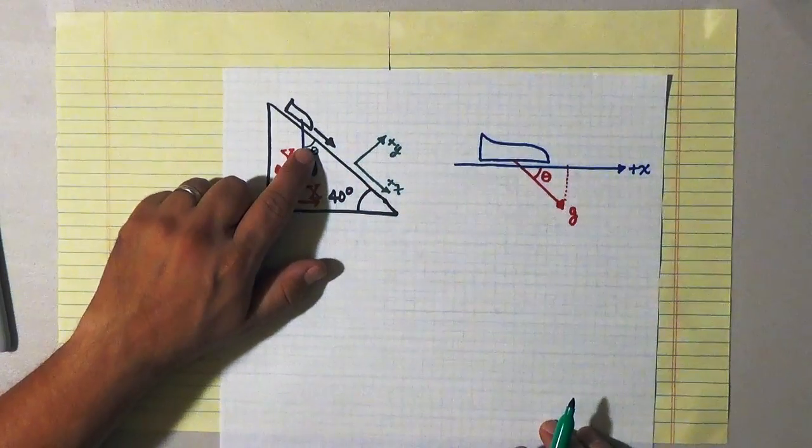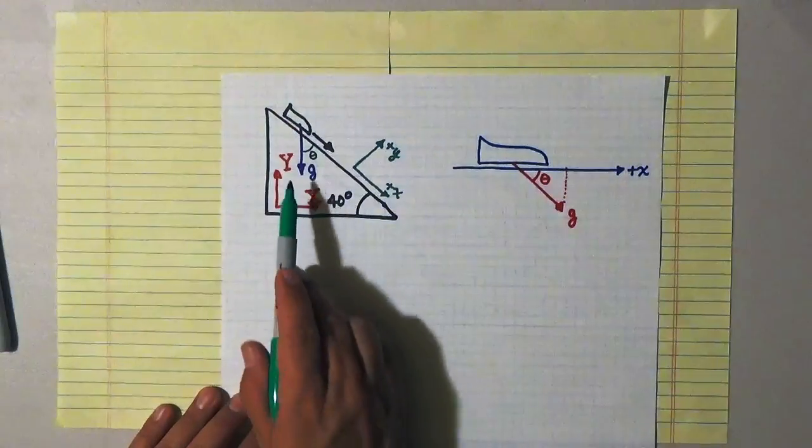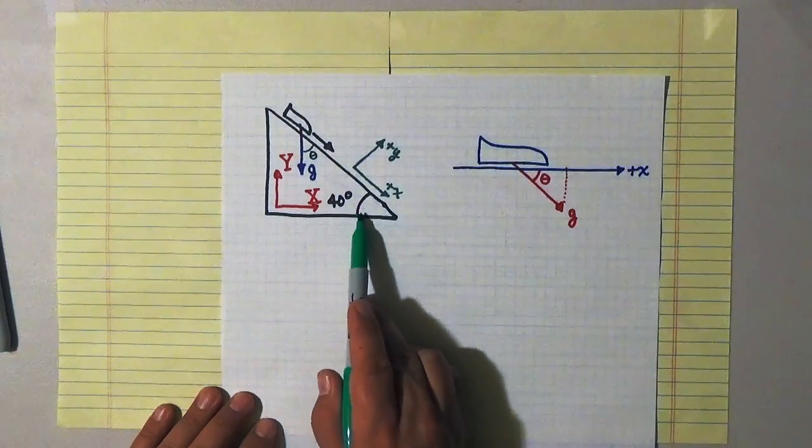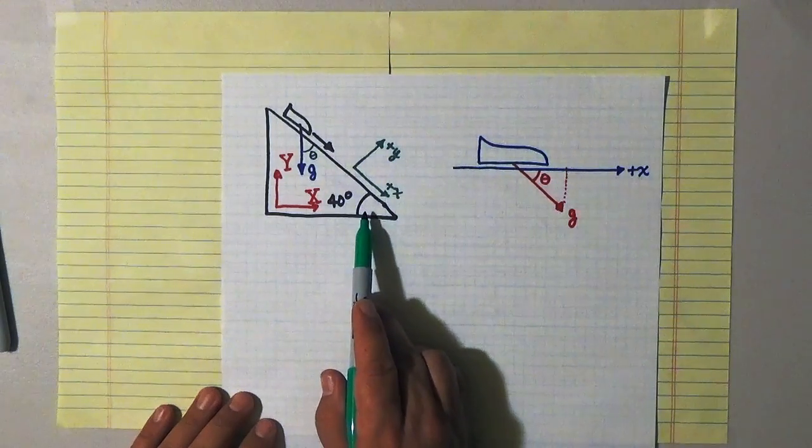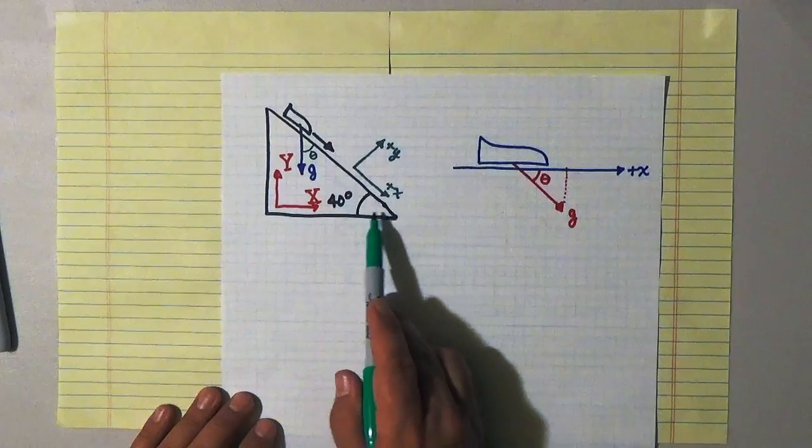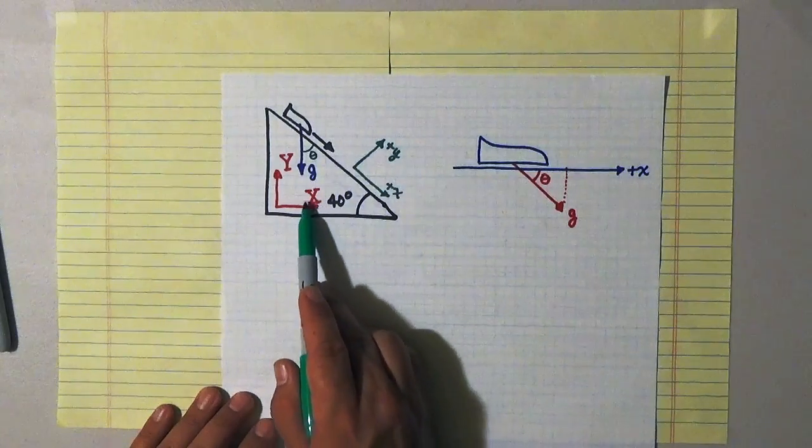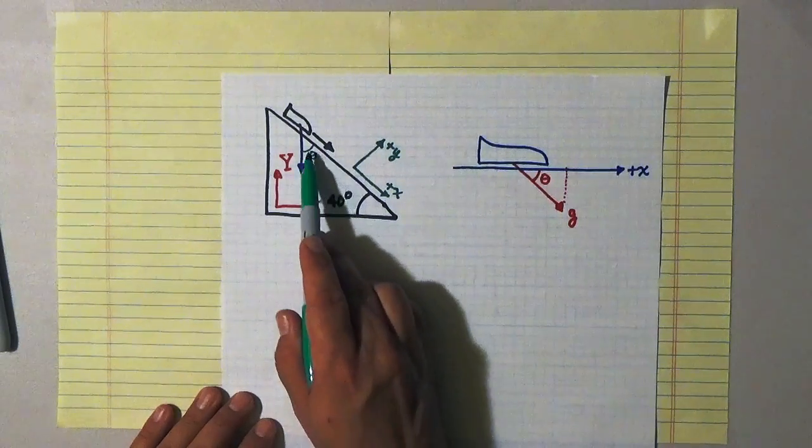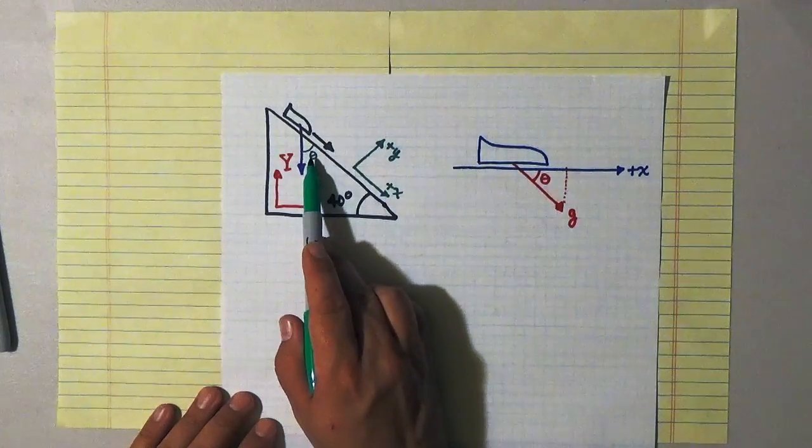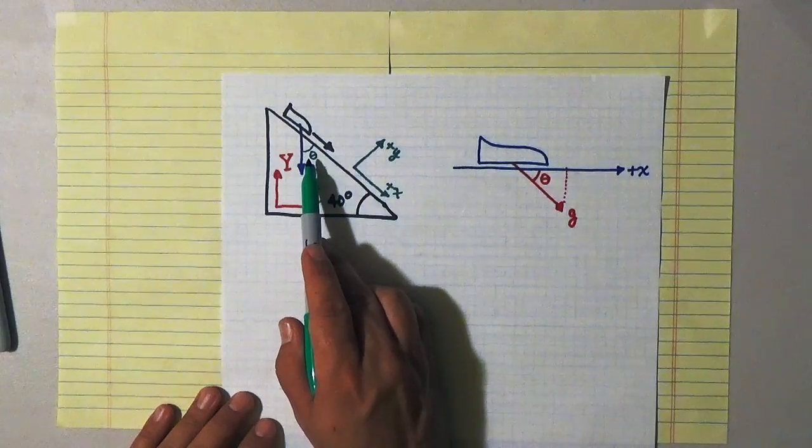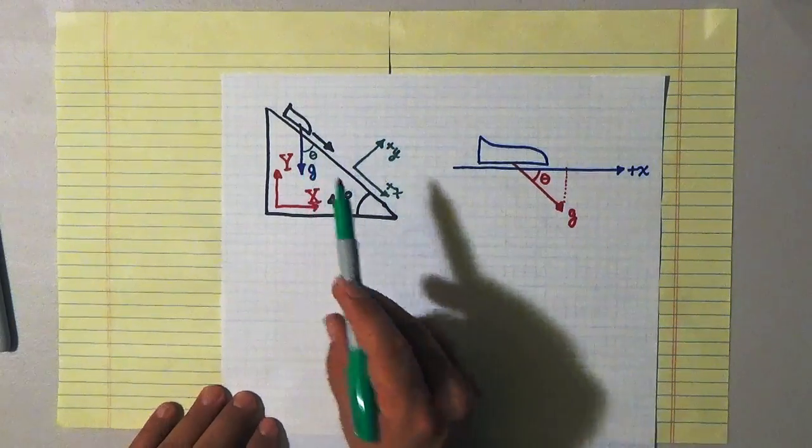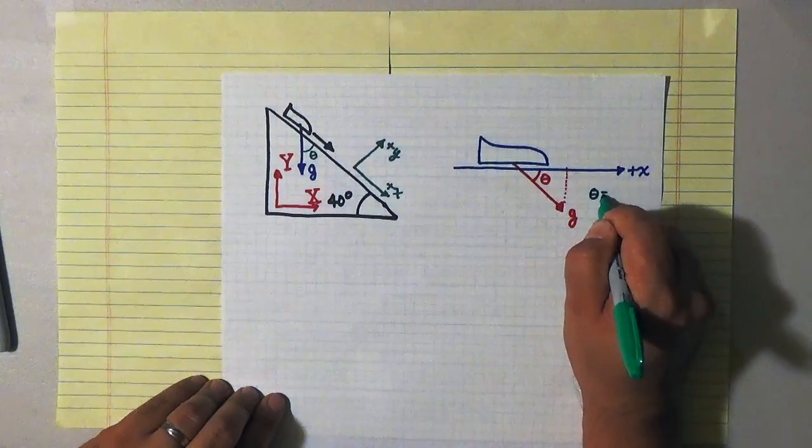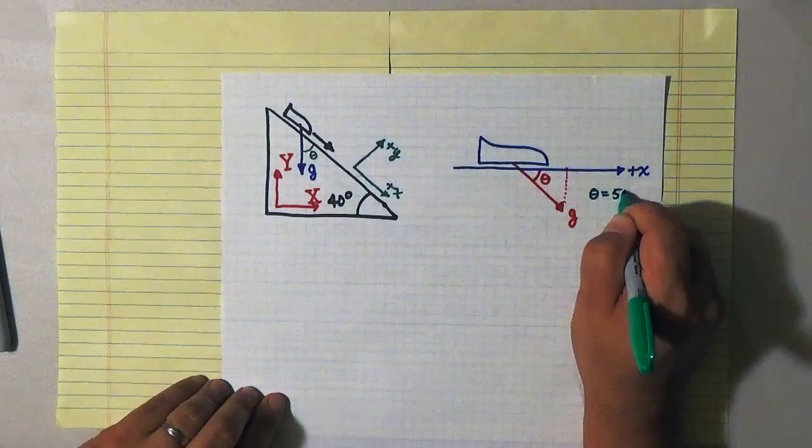And this angle is part of the right triangle that's formed by the g vector and the hill slope angle right here that I know. Since this is a right triangle that means the angle here formed with the g vector is 90 degrees. And so what that means is that this angle and this angle theta, the angle that I'm interested in, must sum to 90 degrees. Or in other words the angle theta is equal to 50 degrees.